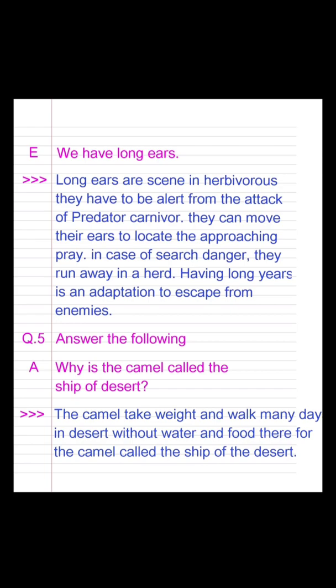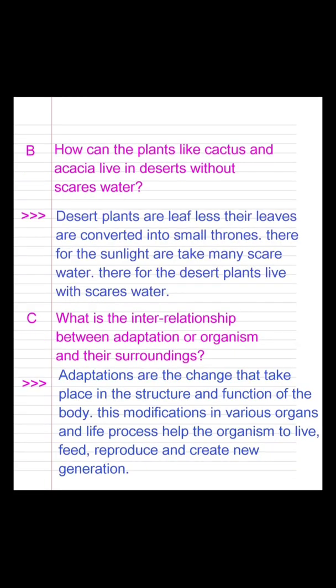Question 5. Question A: Why is the camel called the ship of the desert? Answer: The camel can carry weight and walk many days in the desert without water and food; therefore the camel is called the ship of the desert. Question B: How can plants like cactus and acacia live in the desert with scarce water? Answer: Desert plants are leafless. Their leaves are converted into small thorns, which reduces water loss. Therefore desert plants can live with scarce water.